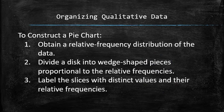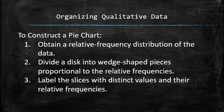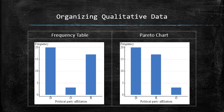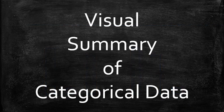In summary, to construct a pie chart, first we obtain a relative frequency distribution of the data. Then we divide a disk into wedge-shaped pieces proportional to the relative frequencies, and we label the slices with distinct values and their relative frequencies. Note that due to the absence of a natural order, the categories in categorical data can be rearranged for different purposes. For example, in a Pareto chart, the bars are arranged in decreasing order by category size from the largest to the smallest. We discussed different ways to visualize categorical data — the two most basic ones are frequency tables and bar charts.